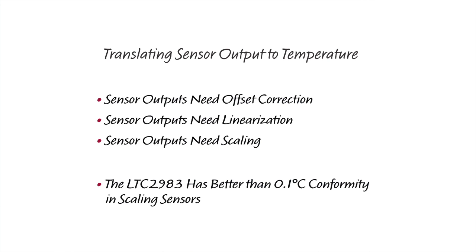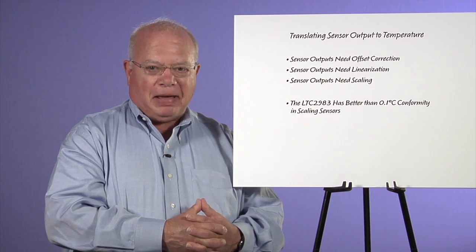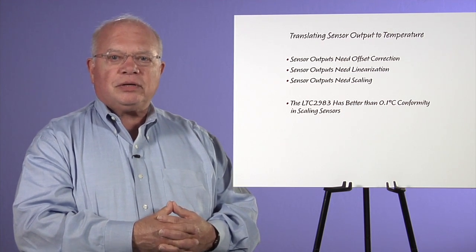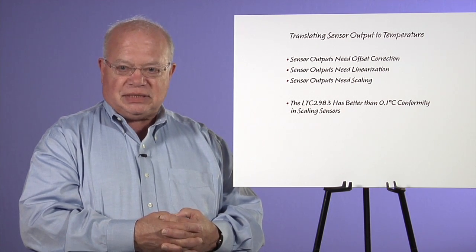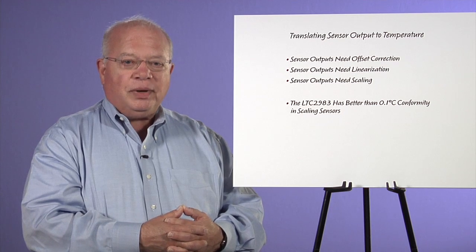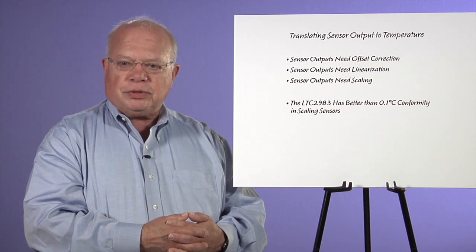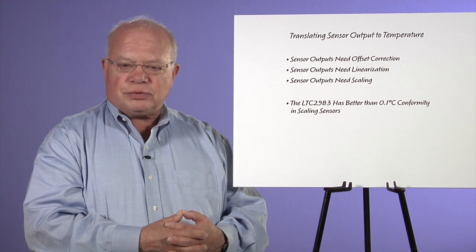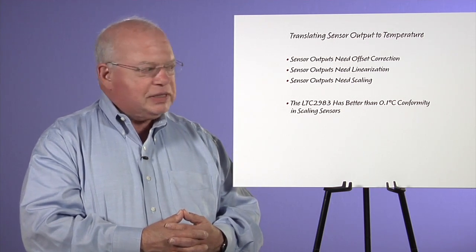We aim to get the best accuracy we can in the electronics so that we throw all the inaccuracy back into the sensor. We call our device 0.1 degree C accurate, but it's really 0.1 degree C conformity because we can't tell you what the sensor accuracy is. We have some RAM in our processor so that you can put in custom linearization and scale factor for different sensors, and you can end up with much better accuracy than the as-manufactured sensors will give you.